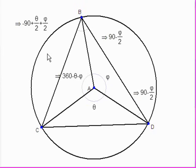So when we add ABC onto ABD, we see that the 90s cancel out and the Phi upon 2s cancel out, and we're left with Theta upon 2.